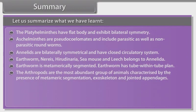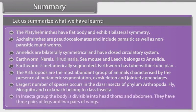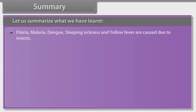Arthropods are the most abundant group of animals, characterized by metameric segmentation, exoskeleton and jointed appendages. The largest number of species occurs in the class Insecta of phylum Arthropoda. Fly, mosquito and cockroach belong to class Insecta. In the Insecta group, the body is divisible into head, thorax and abdomen, with three pairs of legs and two pairs of wings. Filaria, malaria, dengue, sleeping sickness and yellow fever are caused by insects.